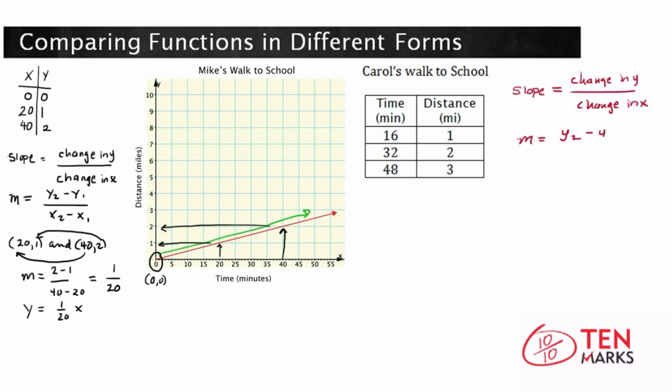our y2 minus y1 divided by x2 minus x1. So if we take any two points, like 16 comma 1 and 32 comma 2, we should be able to calculate the slope. The slope is going to equal 2 minus 1 over 32 minus 16, or 1/16.